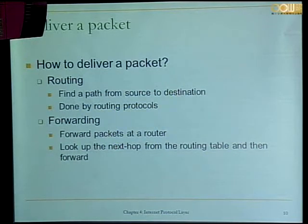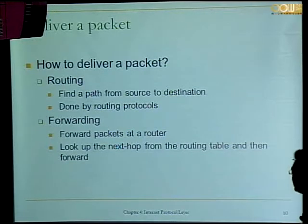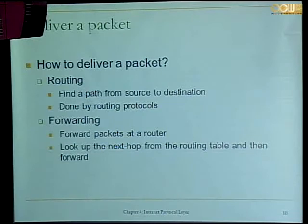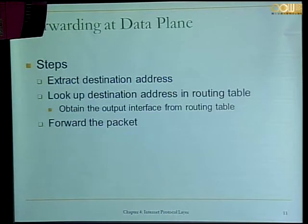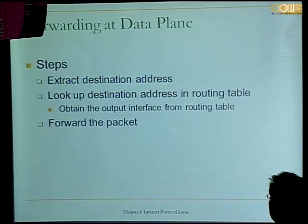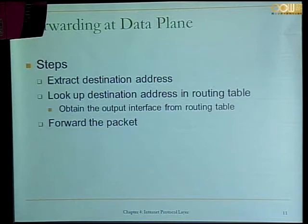To deliver packets, there are two parts: a control plane and a data plane. Routing is for the control plane and forwarding is for the data plane. Routing finds and calculates a path, done by routing protocols. Forwarding forwards a packet by looking up the routing table to find the next hop and then forwarding. You take the destination IP address from the packet, look up the routing table to find a match, find the output interface of that entry, and forward the packet — it's a matching process.